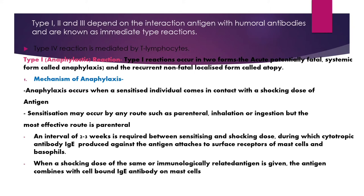Type 1 is the anaphylactic reaction. Type 1 reactions occur in two forms: the acute potentially fatal systemic form known as anaphylaxis, and the recurrent non-fatal localized form known as atopy. The mechanism of anaphylaxis is shown on your screen. Anaphylaxis occurs when a sensitized individual comes in contact with the shocking dose of antigen.